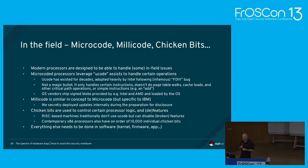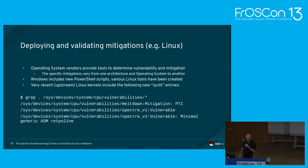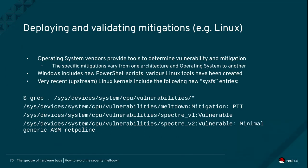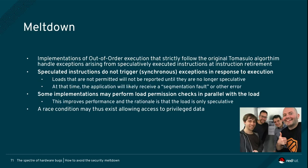Everything else has to be done in software. On your Linux machine, you can look in a directory — for each nasty horrible thing that comes up you'll see a new file. Spoiler alert: we've had more than one. If more arrive, things will appear there. So let's go through the issues.